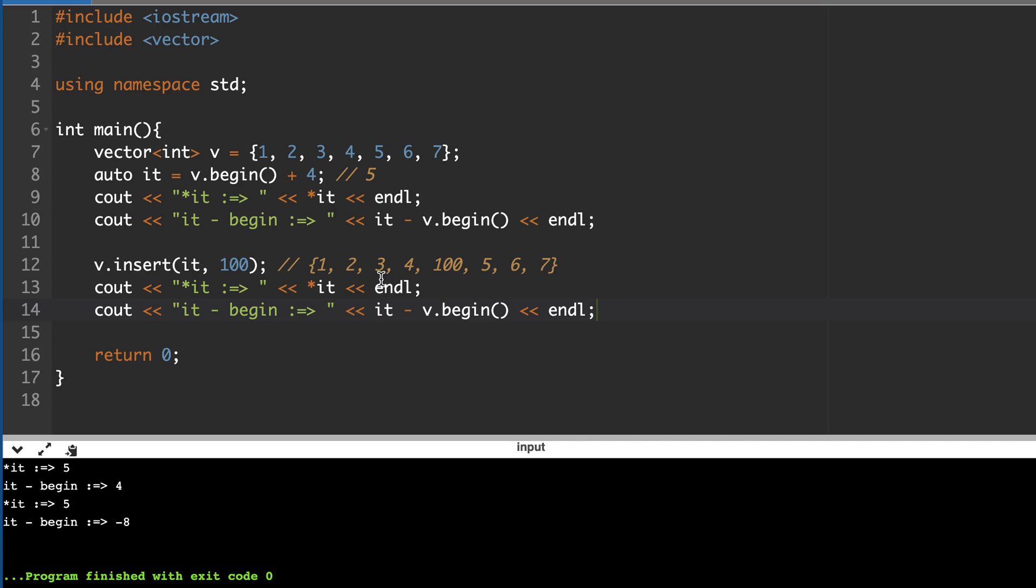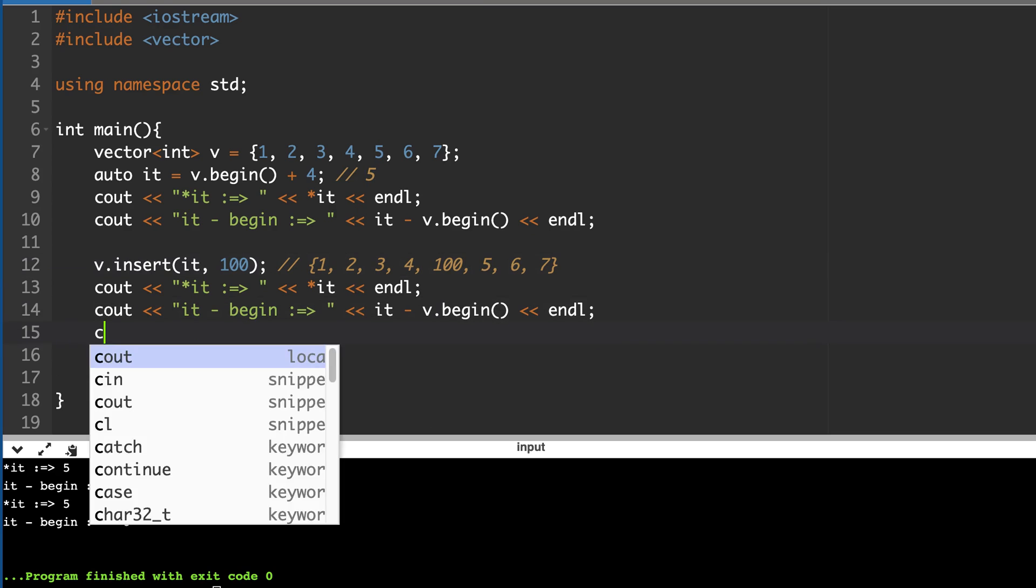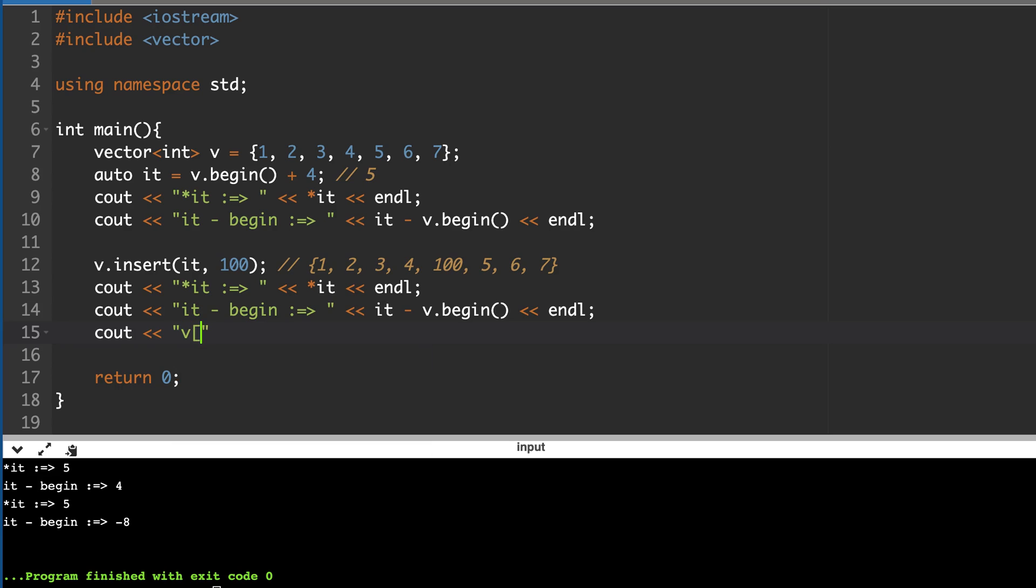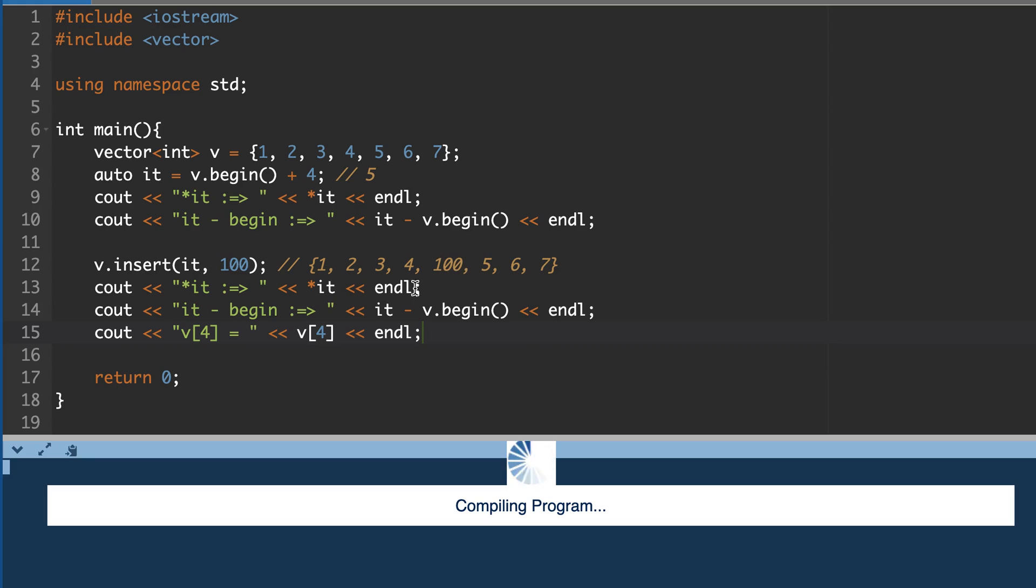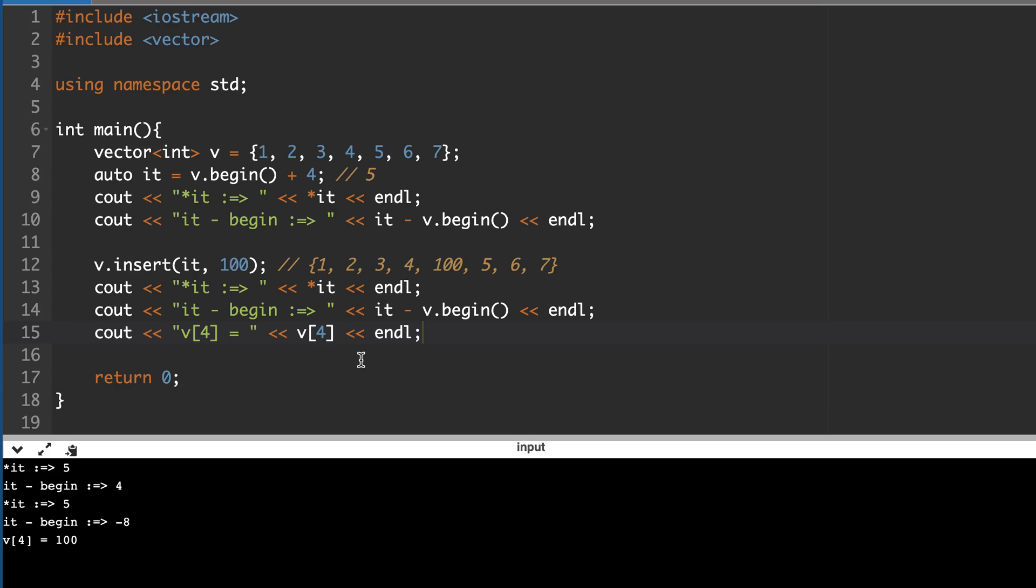And you see it prints 5. And if you write it minus begin, it was 4 here. So if everything has shifted and it is pointing here, then it should have been 5, it minus v.begin(). But you see minus 8, so there is something wrong here. You can even verify by printing v[4]. So this should clearly print 0, 1, 2, 3, 4 is 100. And this prints 100 as expected. But this is a surprise. Why is it showing minus 8? It minus v.begin().